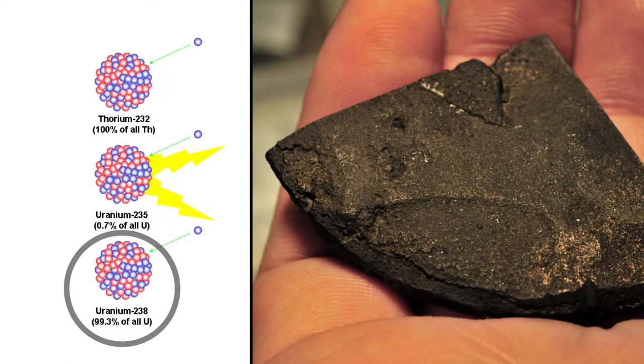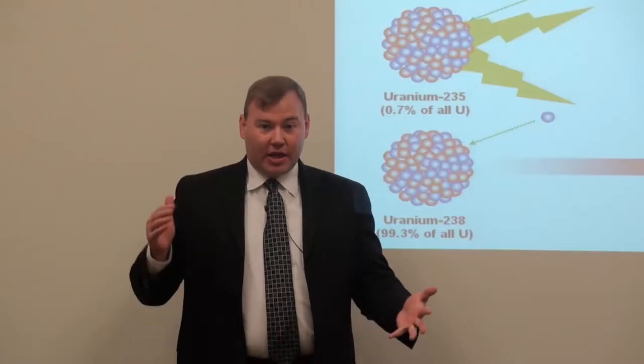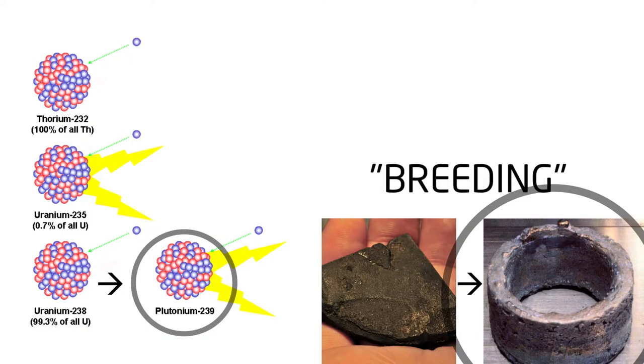Most of the uranium was uranium-238. This had to be transformed into another nuclear fuel called plutonium before it could be used.